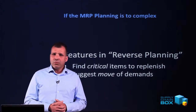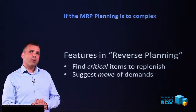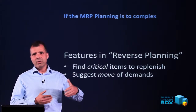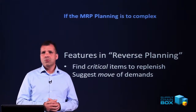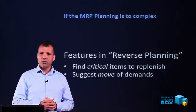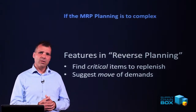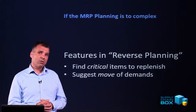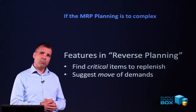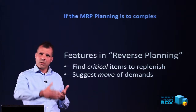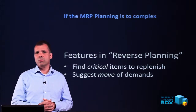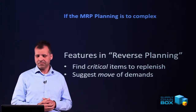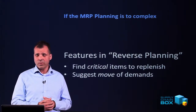The two main features of reverse planning are: first, to find critical items — items that get below safety stock within the lead time — so we can identify as quickly as possible all the items we have to react on right now. The second big feature is to be able to move demands, meaning moving sales demands, component demands, and transfer order demands relative to the dates on which we can actually deliver them.